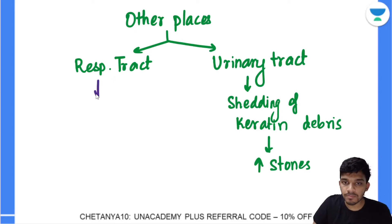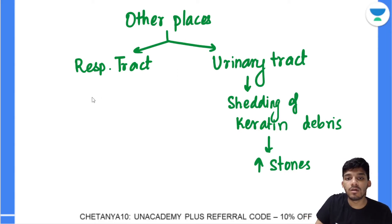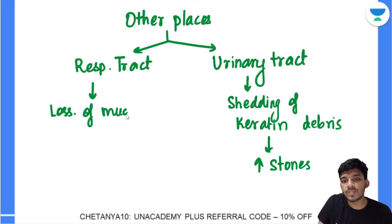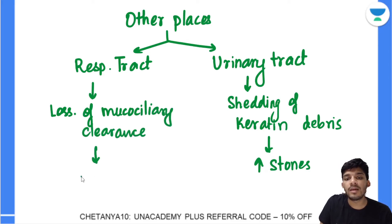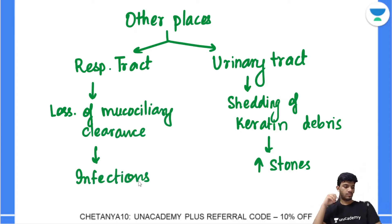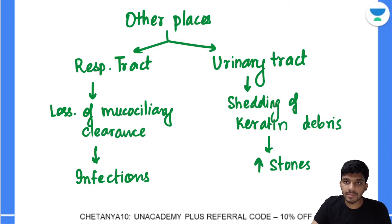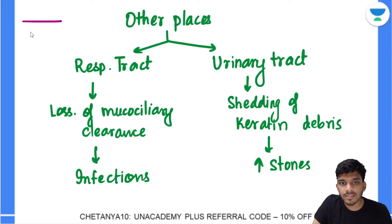In the lungs, Vitamin A deficiency causes loss of mucociliary clearance, and this leads to superimposed infections in the lung.